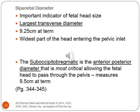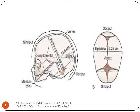Let's discuss the biparietal diameter and the suboccipital bregmatic. The biparietal diameter is an important indicator of fetal head size — it's the largest transverse diameter at 9.25 cm at term, and the widest part of the head entering the pelvic inlet. The suboccipital bregmatic is the anterior-posterior diameter most critical for allowing the fetal head to pass through the pelvis, measuring 9.5 cm at term. See this information in your text, pages 344 to 345. This picture depicts the biparietal diameter of 9.25 cm for the presentation of the infant's head.